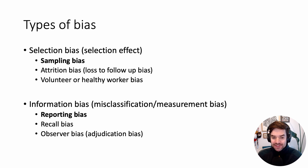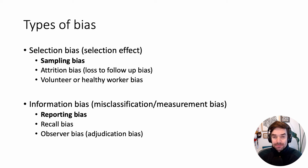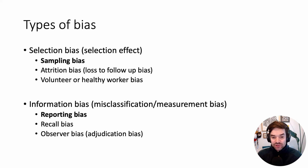For information bias, the three main subtypes are: reporting bias — the information you got was incorrect or changed in some way, such as with Larry's doctored photos; recall bias — this can occur in studies when your outcome of interest requires you to call somebody and they need to remember what happened a year ago, for example; and observer bias, also known as adjudication bias — this occurs when the researcher is adjudicating the outcome and maybe really wants a certain result, causing the results to be biased.